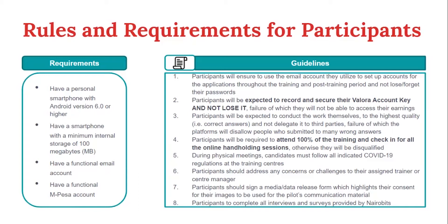The fifth guideline: during the physical meetings, you're supposed to meet all the COVID-19 regulations set by the Ministry of Health in the country — that is, wear a mask at all times, practice social distancing, and sanitize regularly. The sixth guideline: you're supposed to address all your concerns through your assigned trainer. Each cohort is given a trainer who is responsible for hand-holding the cohort. You'll be given a phone number or an email address for your trainer, and you can reach out to them anytime during office hours when you need assistance.